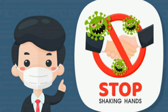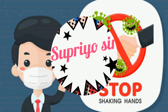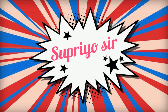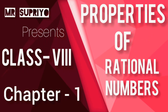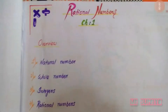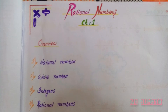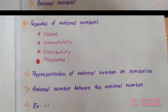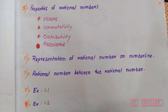Namaste to everyone — stop shaking hands and stay safe. This is Shupriya sir and today I'm going to teach you properties of rational numbers. This is chapter one: Rational Numbers overview. Number one: natural numbers, after that whole numbers, number three: integers, and number four: rational numbers. These four topics we have covered in our rational numbers in the first video.